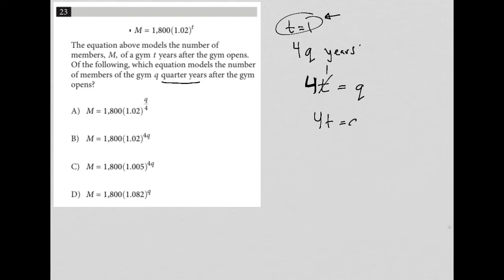This is why four T is equal to Q. So if I'm replacing my T in the equation here, then I'm just going to solve for T in this equation here, which leads me to T is equal to Q divided by four. And that also tells me then that the answer must be choice A.